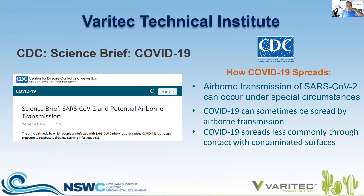I was at the CDC site today seeing what the latest guidance is regarding SARS-CoV communicated via airborne transmission. It now has a statement that the principal mode by which people are infected with SARS-CoV-2, the virus that causes COVID-19, is through exposure to respiratory droplets carrying infectious virus. That somewhat contradicts older statements about the spread of infectious diseases. Older CDC statements say airborne transmission of SARS-CoV-2 can occur under special circumstances, and that COVID-19 can sometimes be spread by airborne transmission.